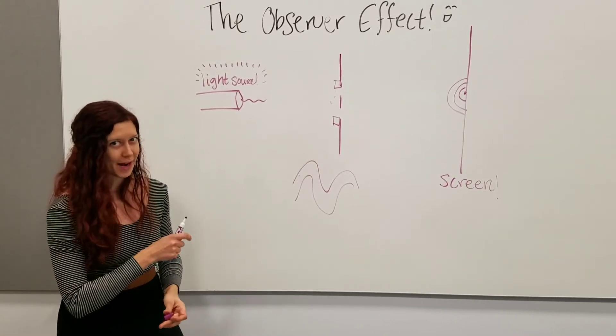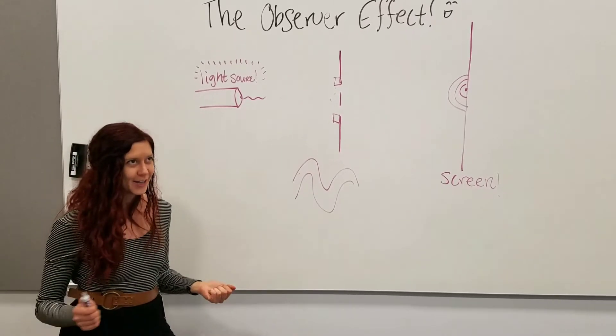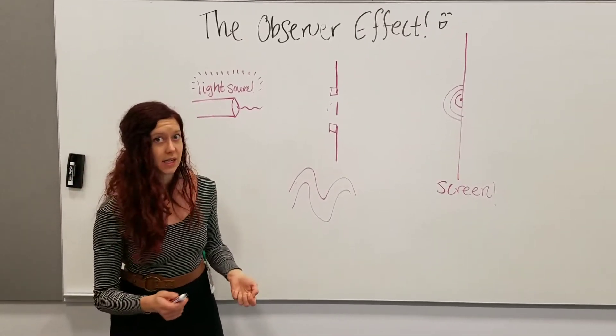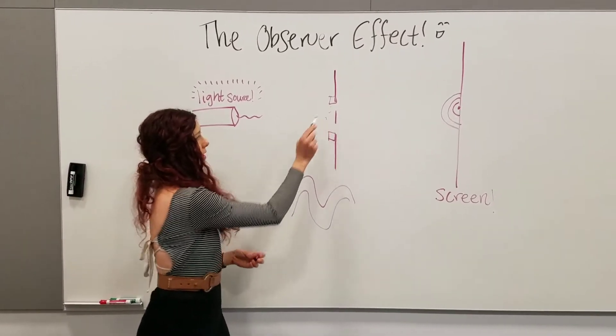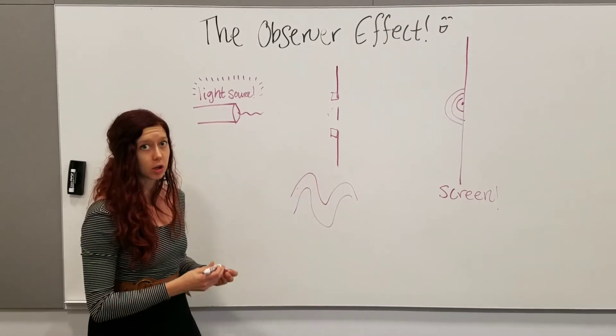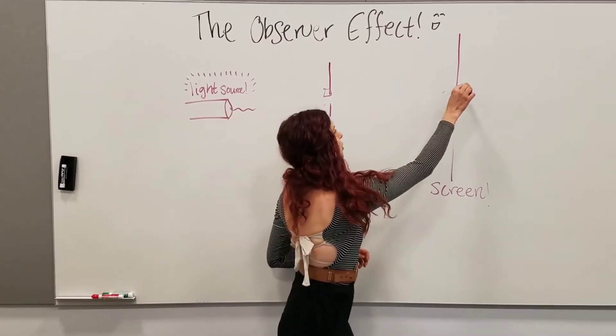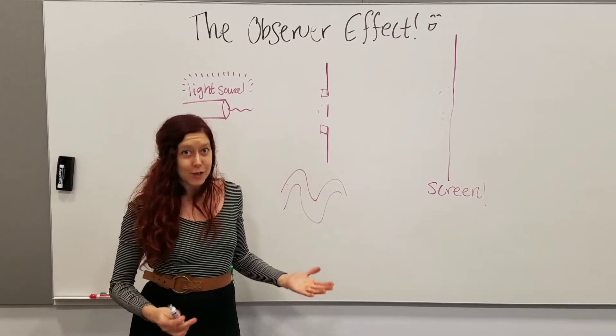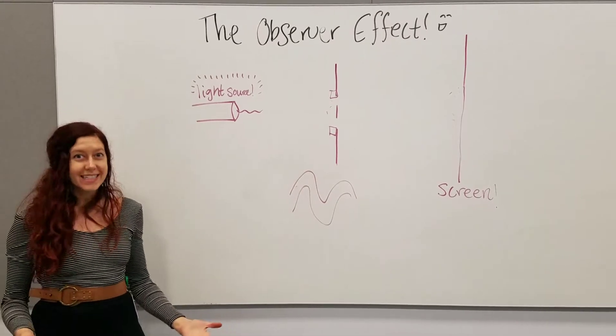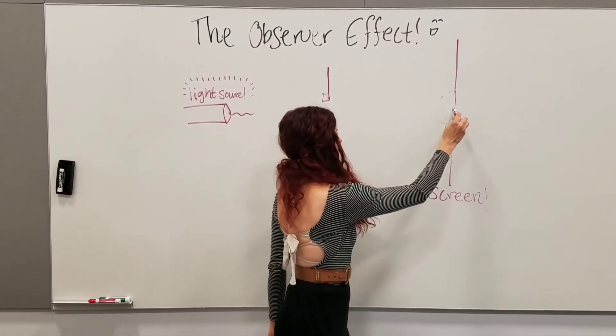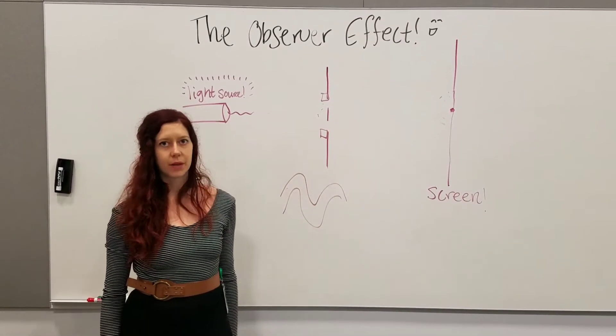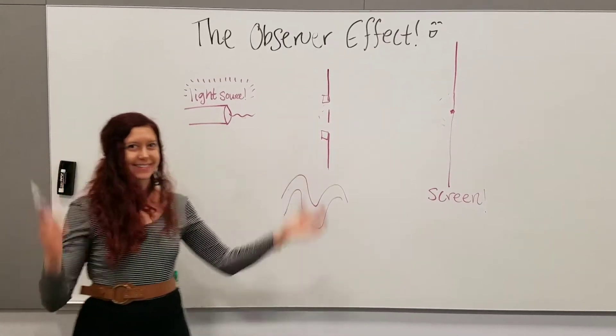But that's not at all what happens. Dun-dun-dun! Okay, so it's really crazy, actually, because as soon as you put detectors here, and try and measure where the photon is going, that disappears. Well, not your screen. But the interference pattern disappears! What?! And you just get a regular spot of light in the middle. What the heck? What?! That's so crazy!